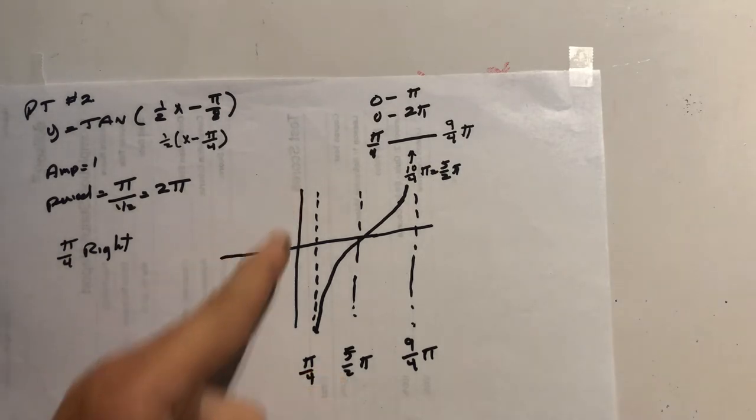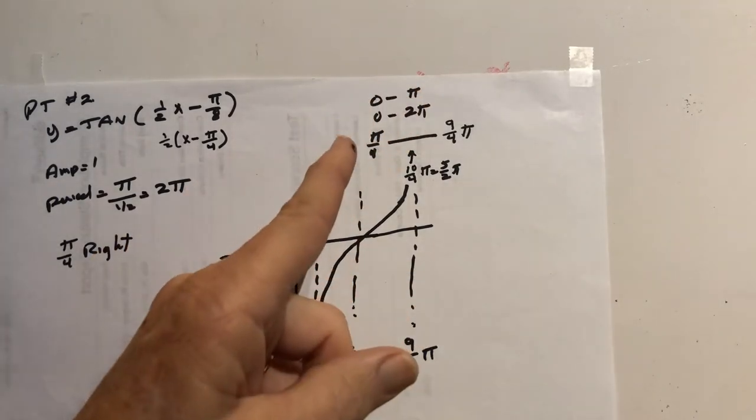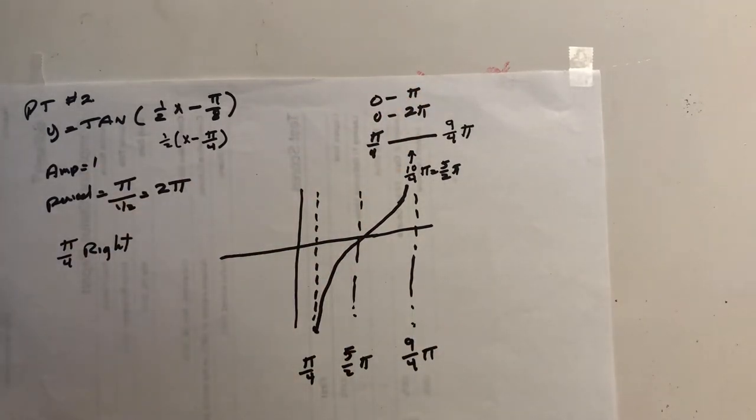So I drew my axis. The solid ones are my axis. It's normally 0 to pi, but it's going to be 0 to 2 pi, and it's going to be shifted pi over 4.